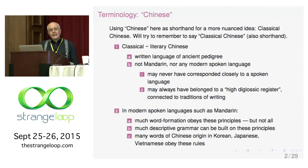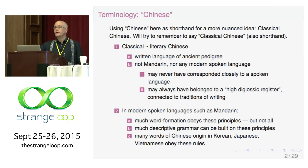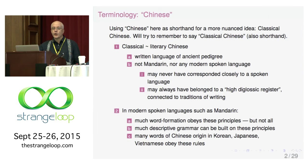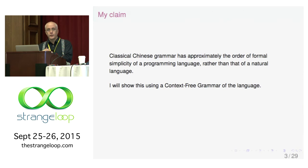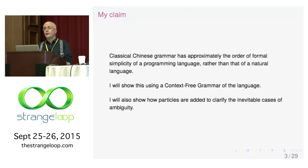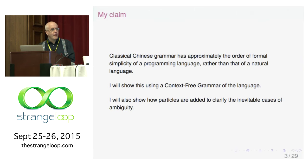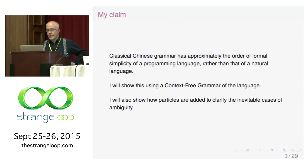Furthermore, this classical Chinese thing is also found in the literate languages around China — in particular Korea, Japan, and Vietnam until fairly recently. There's a lot of Chinese vocabulary in those languages, fully assimilated, so the same principles of word formation apply. I'm going to claim that classical Chinese grammar has approximately the order of formal simplicity of a programming language rather than that of a natural language. I'll try to show this using a context-free grammar which I'll describe during the next half hour. And then I'll show you how little tweaks can be done to reduce ambiguity in this highly compressed language.